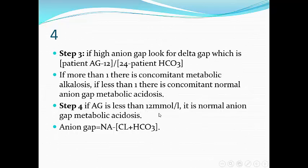Step four: if the anion gap is normal — less than 12 mmol/L or within normal per your lab — it is normal anion gap metabolic acidosis. Unlike high anion gap, which involves adding acid to the circulation, normal anion gap metabolic acidosis is simply loss of bicarbonate from the body. With loss of bicarbonate, the body compensates with a gain of chloride to maintain electroneutrality, so the formula stays balanced and the anion gap remains normal.